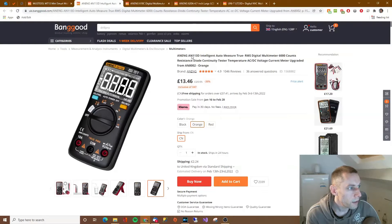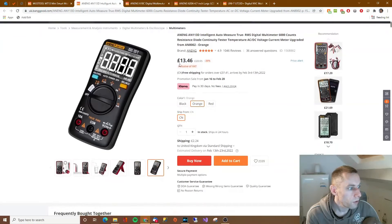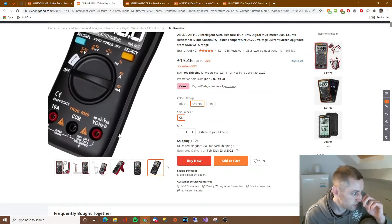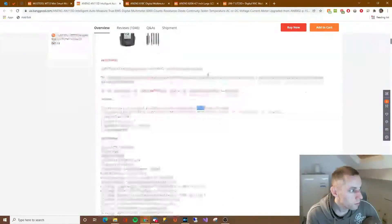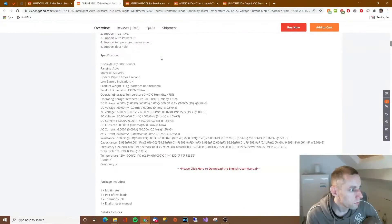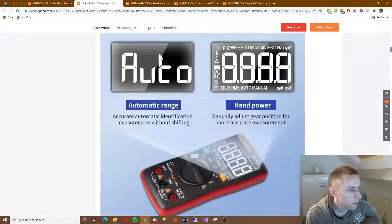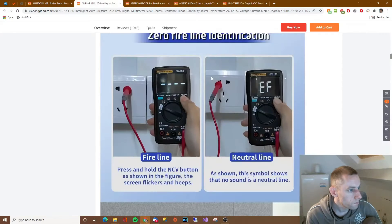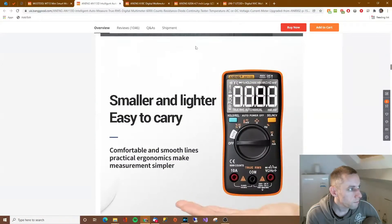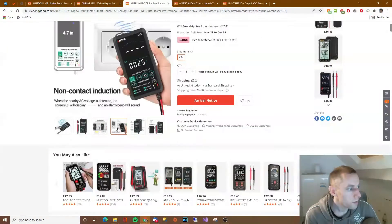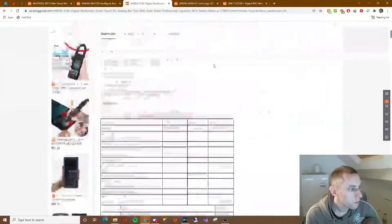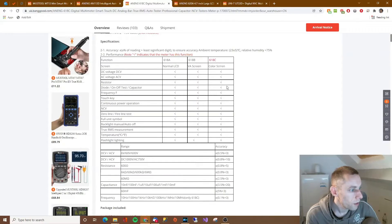Second one, Anang 8N113D intelligent auto measure. Only £13.46 and there's a picture of it. And we've got the details again. Then we've got the Anang 618C digital, £18.70. And there's a picture of this one, of course, and the details.